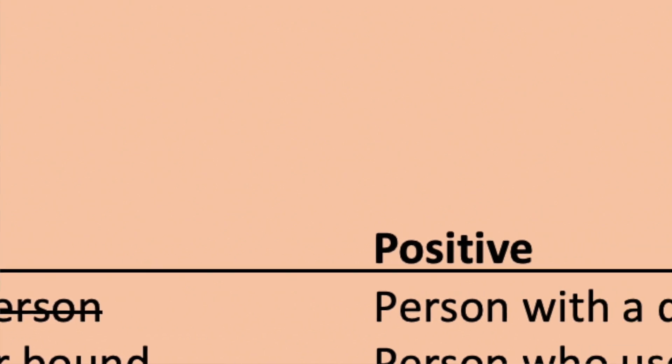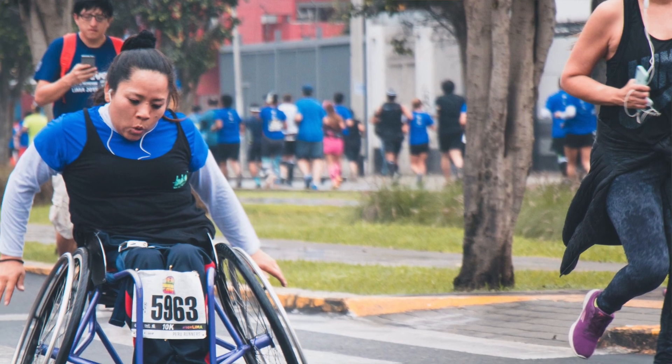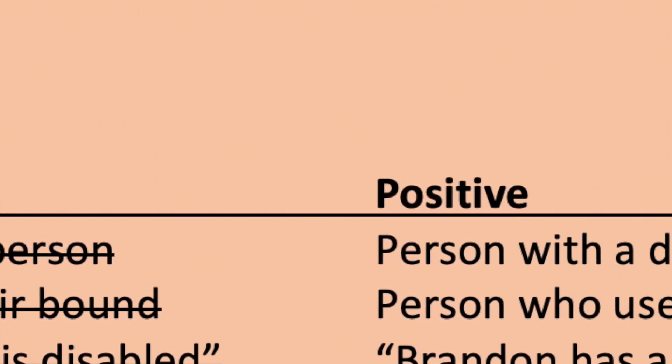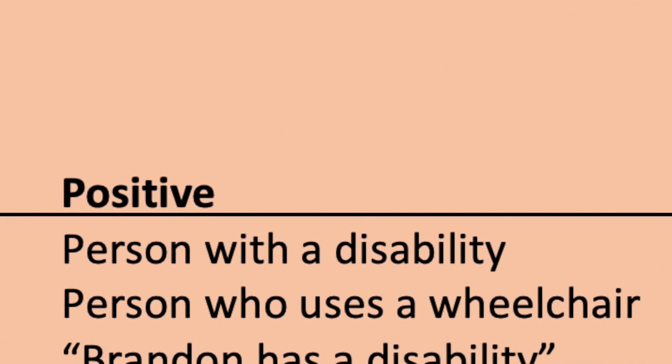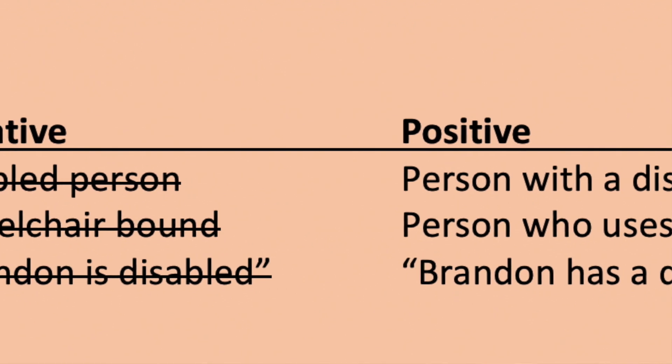Generally, the Center on Disability and Journalism recommends using people-first language unless otherwise indicated by the individual or the group. To give you a sense of how and when to use person-first or identity-first language, let's look at some specific examples. 'Disabled person' is problematic because you're identifying a person as their disability. Think carefully about the negative connotations you may be uncritically imposing on someone else's experience. For example, 'wheelchair bound' or 'confined to a wheelchair' foregrounds equipment over the person. People who use mobility equipment consider these devices an extension of themselves — the equipment liberates them by making it possible to maneuver through the world. Best practices would be referring to 'a person who uses a wheelchair.'